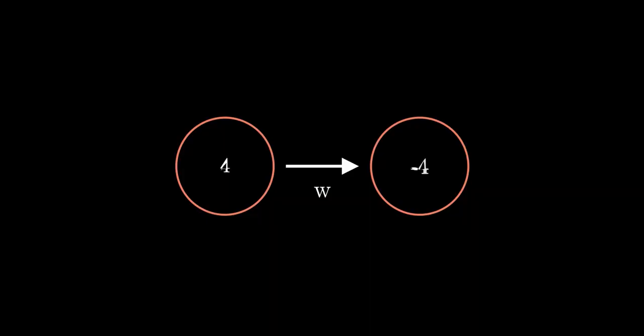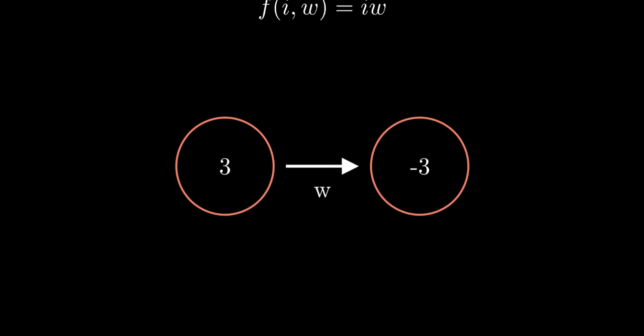These perceptrons can model all kinds of tasks. For example, let's say we wanted to build a simple perceptron that takes in an input and outputs the negated number. So we feed it a 4, it gives us negative 4. We give it a 1, it gives us negative 1. Or we feed it negative 0.5 and it gives us positive 0.5. The way we determine the value of the output perceptron is pretty simple: it's just a mathematical function that multiplies the input from the input perceptron by the weight between input and output. That's it.